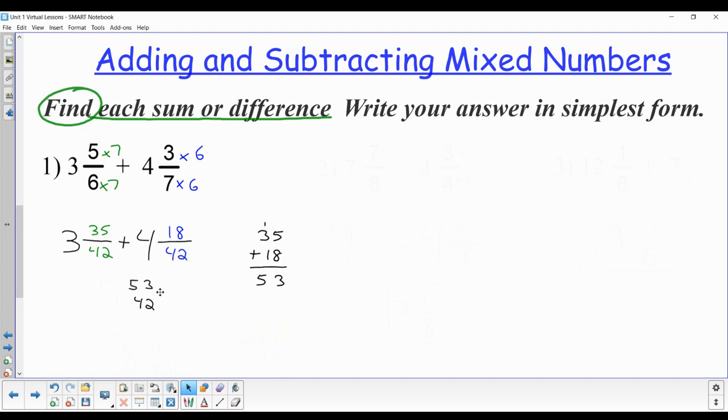If you can do these in your head, that's great, but you do not have to do them in your head. You can write the work down on the side. And once you do the fraction part, then you do the whole number. 3 plus 4 is 7, and we have the fraction 7 and 53/42, which does give us a slight problem.